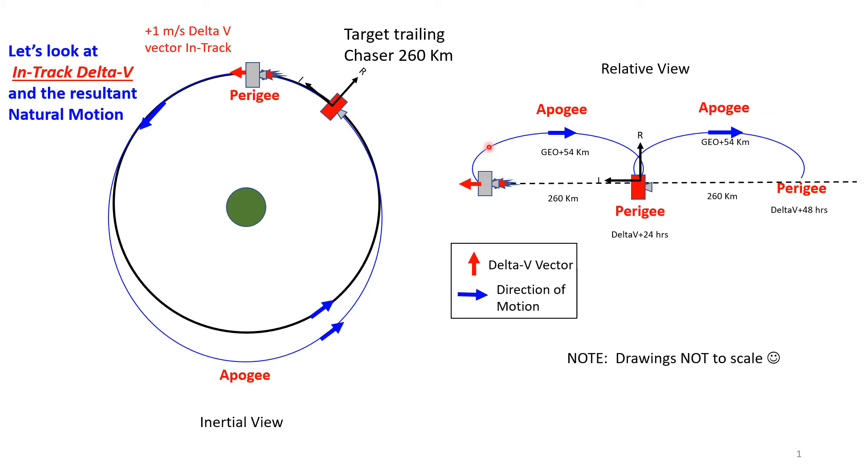After about one-sixth of the orbit period, it crosses overhead and is heading in the negative i direction. Why? Because it's higher, it's going slower. This is motion relative to the target. Twelve hours later it's at apogee, geo plus 54 kilometers. Then when it comes down, it descends, speeding up, and goes whizzing by the target. They don't collide—pretend like they don't. One rev later, it hopped back 260 kilometers.